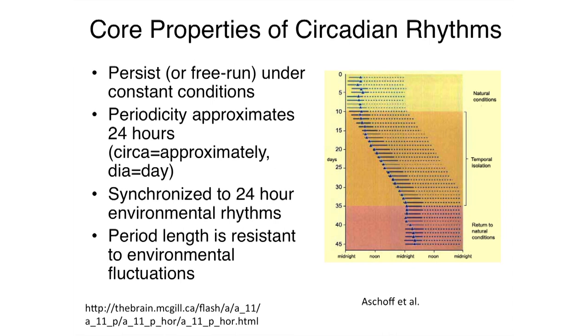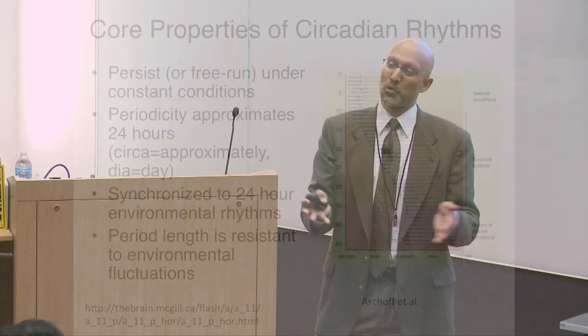The second point is that it's not actually exactly 24 hours. For human beings, left to our own devices, we would wake up later and later each day. That means our internal clocks are actually a little longer than 24 hours, which is why some of us use an alarm clock. If humans had clocks shorter than 24 hours, we would need an alarm clock in the evening to keep us awake — just imagine that world. But we're longer than 24 hours as a species generally, with some exceptions.